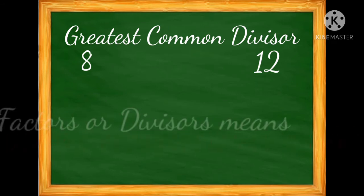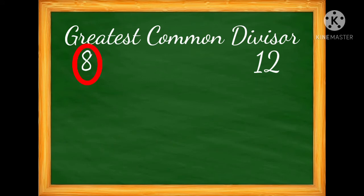One obvious factor of 8 is 1 multiplied by 8, and then 8 is divisible by 2, so that's 2 multiplied by 4. 8 is divisible by 4, but we will not